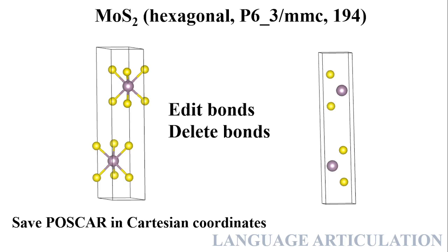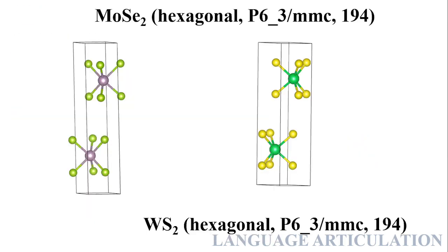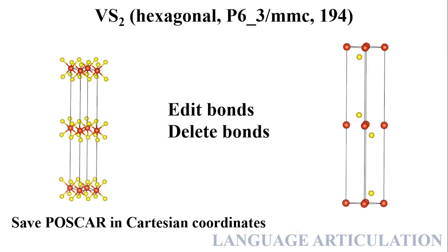The space group P6₃/mmc is the space group for this structure. Now let's move to another structure. If we want to create the same kind of monolayer, we can use this procedure for molybdenum disulfide and tungsten disulfide — this procedure will help for these two cases. Now let's take another system in which there are more complications.